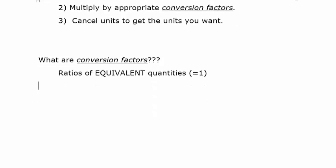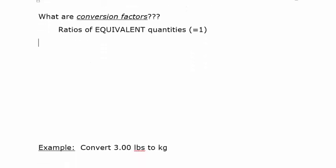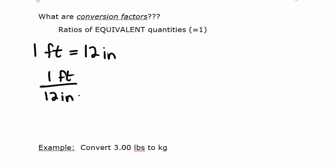A very important part of this is choosing the appropriate conversion factor. Conversion factors are ratios of things that are equal — something on the top and something on the bottom that are equal. For example, one foot equals 12 inches, giving us two possible conversion factors: one foot per 12 inches, or 12 inches per one foot.